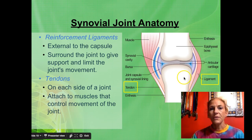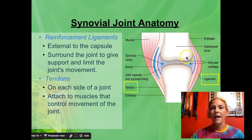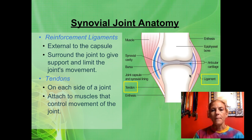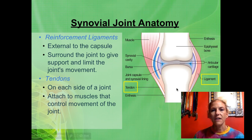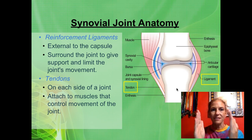Continuing on, we have ligaments and tendons — it's important to know the difference. Ligaments hold bones to bones, providing reinforcement on the various sides of the joint. Think about the knee joint: the ACL, or anterior cruciate ligament, is found in front of the joint. You also have the PCL posteriorly, and the MCL and LCL on the sides. These reinforcement ligaments surround all four sides of the joint, keeping the bones contained as they move.